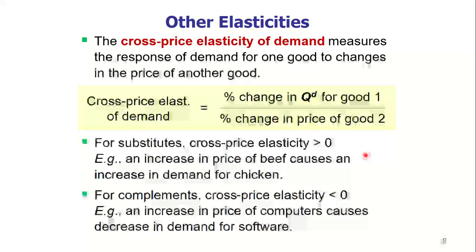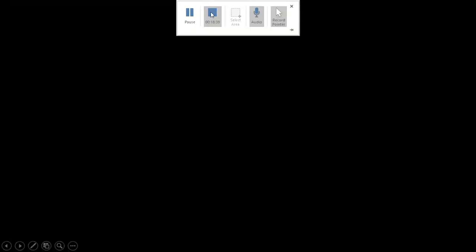For complements, cross-price elasticity is less than 0 — complements are always used together. For example, an increase in the price of computers causes a decrease in demand for software. Similarly, if gasoline prices increase, demand for cars decreases. If the price of one complement rises, demand for the other decreases.